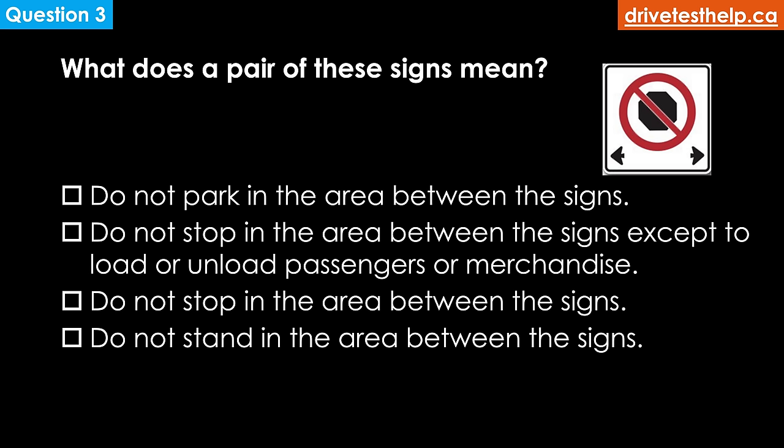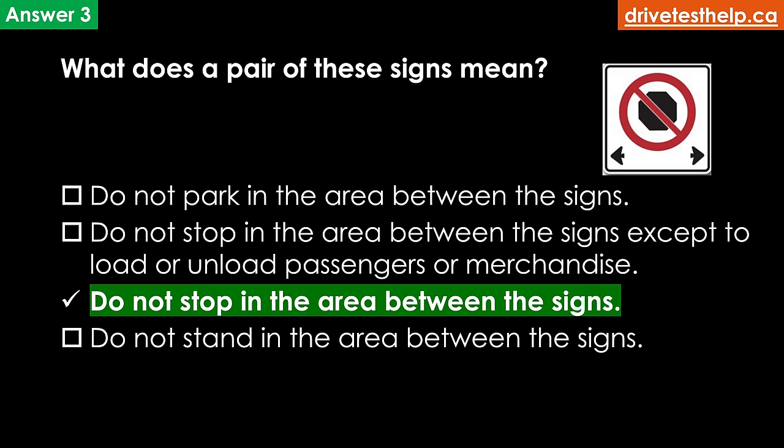What does a pair of these signs mean? Options: do not park in the area between the signs; do not stop in the area between the signs except to load or unload passengers or merchandise; do not stop in the area between the signs; do not stand in the area between the signs. The correct answer is do not stop in the area between the signs. This is a no stopping sign — you are not allowed to stop here even for a moment. These signs are typically used in pairs or groups.